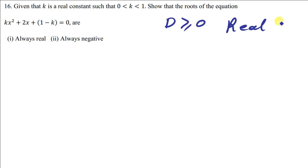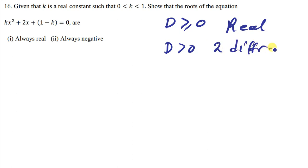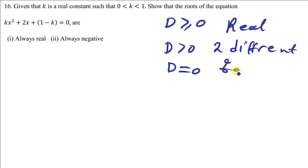When you just say D is greater than zero, we simply mean the given quadratic equation has two distinct or different real roots. When we say D is equal to zero, we're simply talking about the quadratic equation having equal real roots.